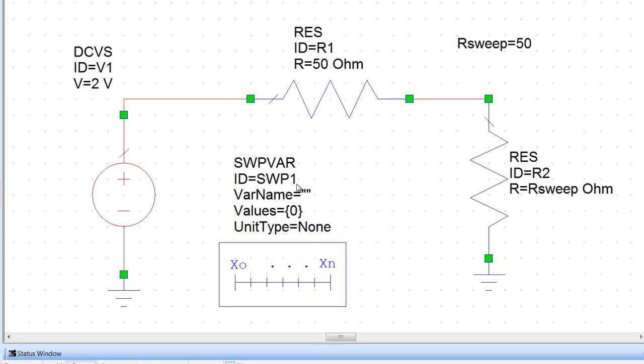Now as you can see there are a few things that need to be set up on this element. First of all the variable name. The variable name will be RSweep in our case. So we need to connect this element that changes the value of a variable to the variable itself. So if we just double click here and just type RSweep, that first step is completed.